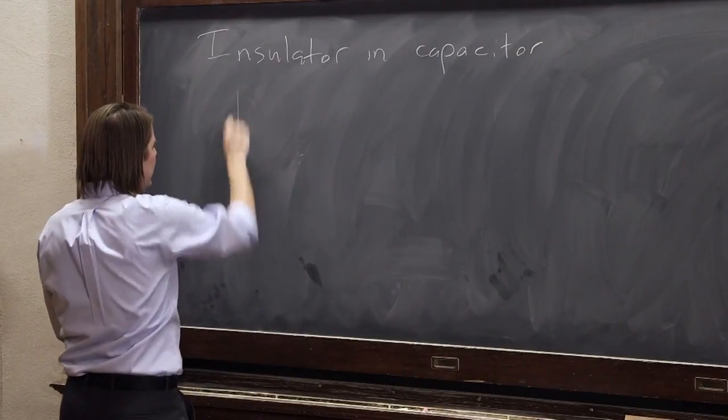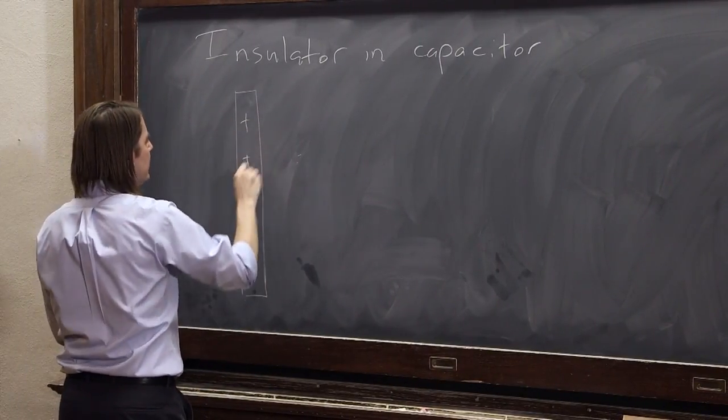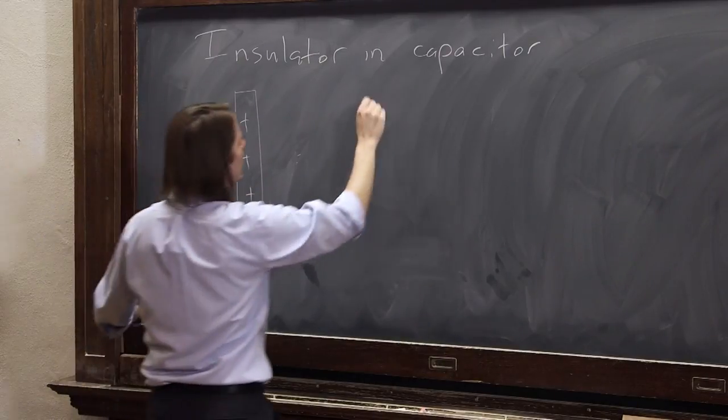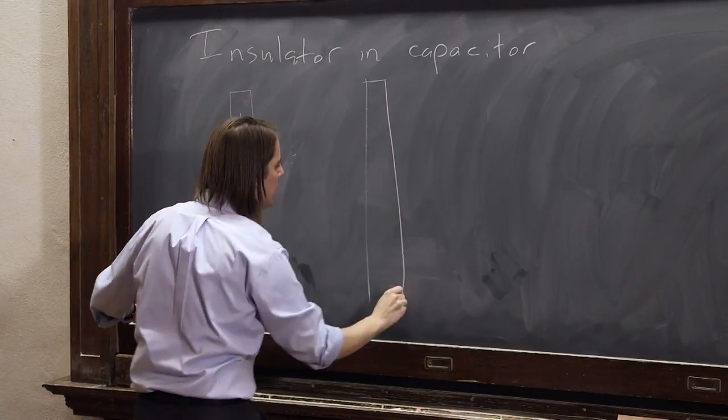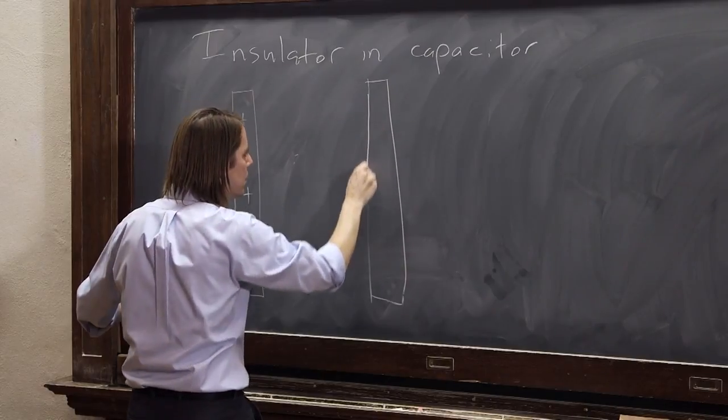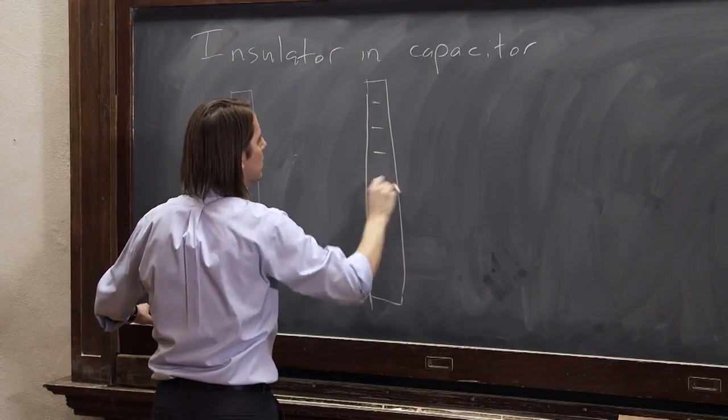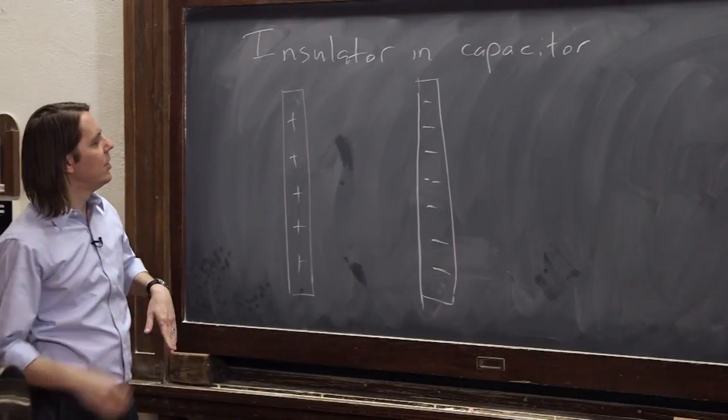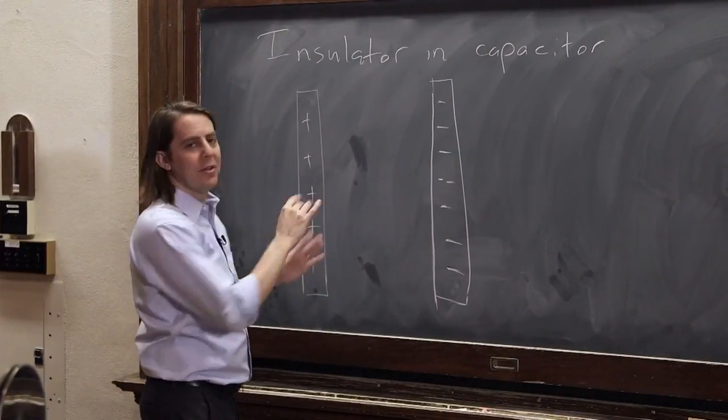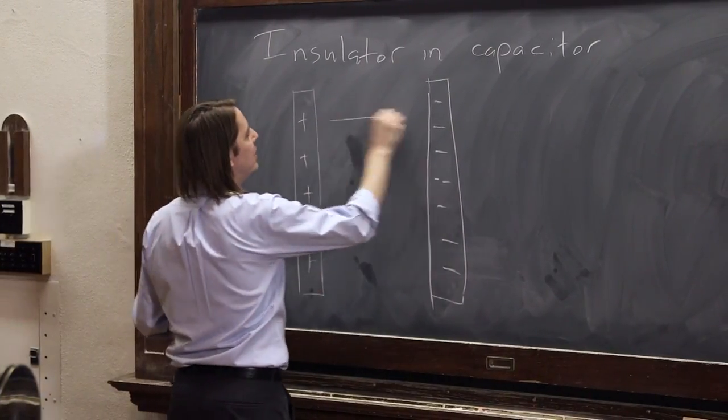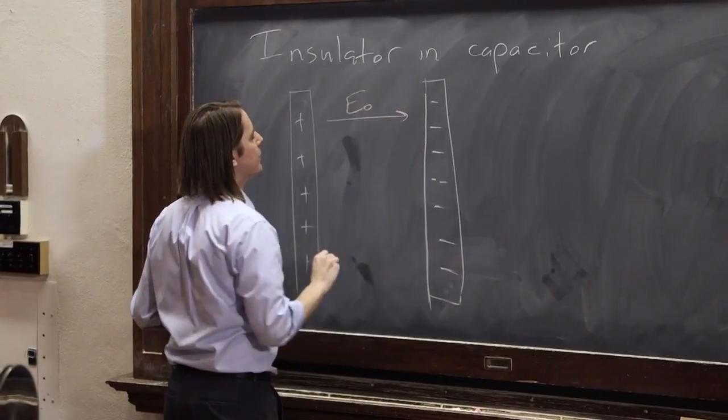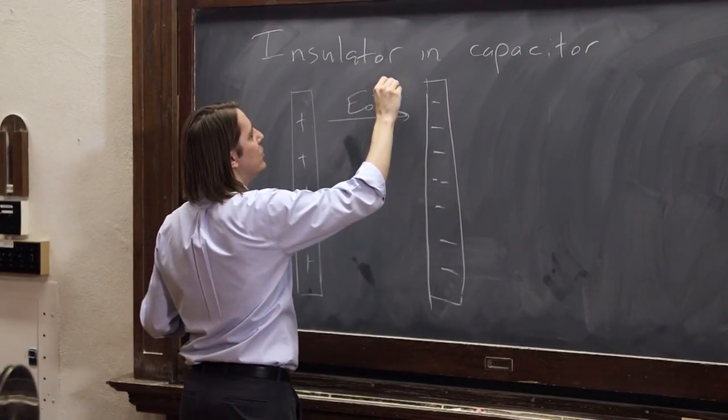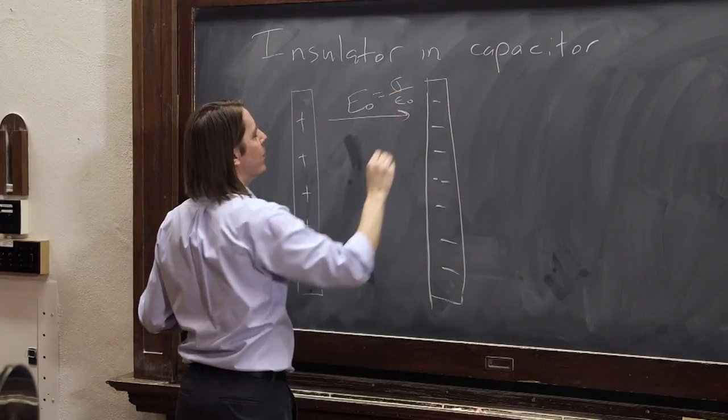So let me draw real quick our capacitor. So our two plates, negative plate over here, standard capacitor. And we know it would create a field if we did nothing. We know it would create a field E naught. And we know that E naught is equal to sigma over epsilon naught.